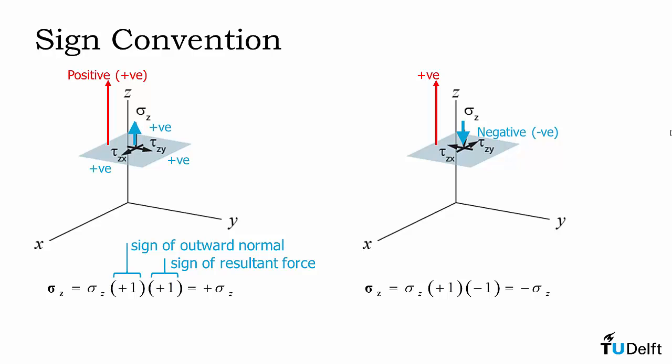If we apply that to the shear stress components on the left example we see that they are all in the positive direction while on the right they are all in the negative direction.